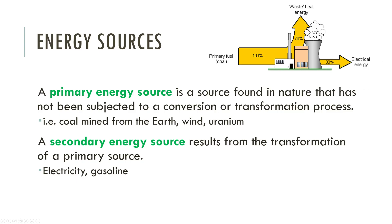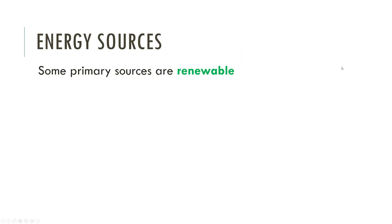Here's an example of a coal-fired power plant. Coal is the primary fuel — raw material we find that has energy in it — and about 30 percent of it makes it to electrical energy, our secondary source, with some heat loss. We're going to look at this type of diagram in a moment.